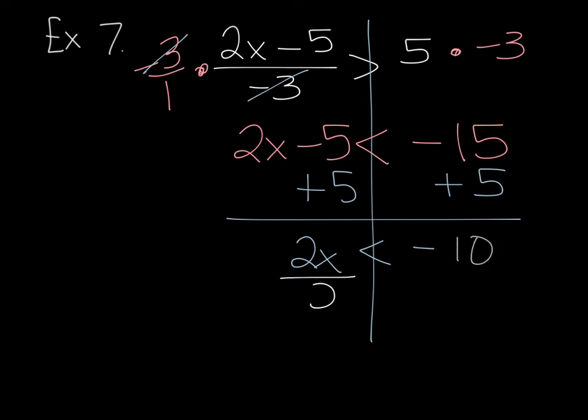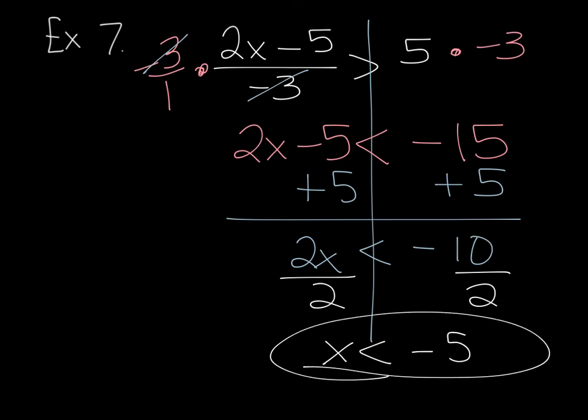And then my last step is simply divide by 2. Again, I'm not multiplying or dividing by a negative. So, I don't have to flip the symbol. I already did that at the top. And X is less than negative 5 would be my final answer. So, again, if you just break these down into steps, they're not as overwhelming. But I wanted you to see all the steps there at the end.